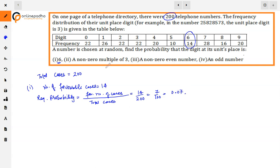The second part is a non-zero multiple of 3. What will be in the multiple of 3? 3, 6, and 9. And we need non-zero, meaning we exclude 0. So the number of favorable cases is these three. We will add 32 plus 14 plus 20, which equals 56.